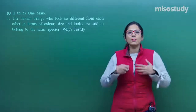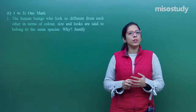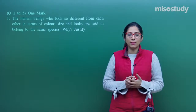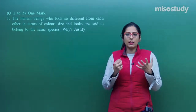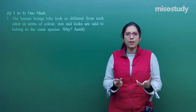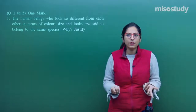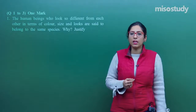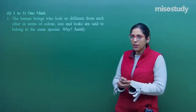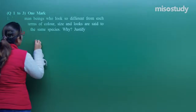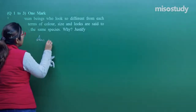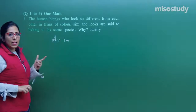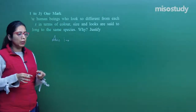On our earth, a large number of the human being population is present and when we look at individuals, they are not at all similar to one another. The colour is different, the features are different, the height is different. So many differences are there, but still we always keep those individuals into one species. There are many reasons for that. The first basic point is that a species is that group of organisms who can interbreed with one another.